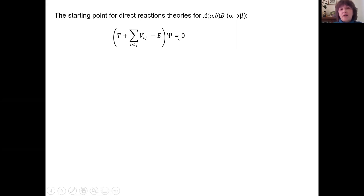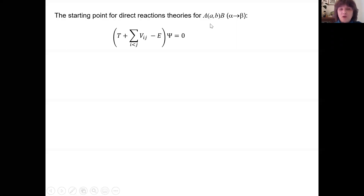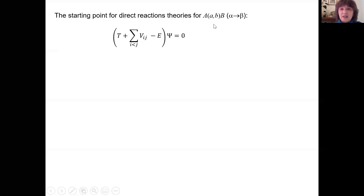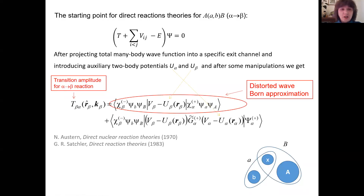To find the transition amplitude for this particular reaction, we have to project the total many-body wave function onto the internal wave functions of the subsystems — the fragments we detect in the exit channel. When we do this and perform a lot of manipulations, we end up with an expression for the transition amplitude.